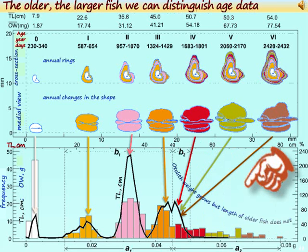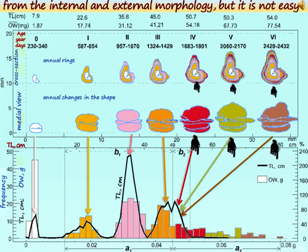In the older, larger fish we have various otolith mass values. That otolith mass can be set up into three age groups. We can distinguish age data from the internal and external morphology of otoliths in larger fish, but it is not easy.